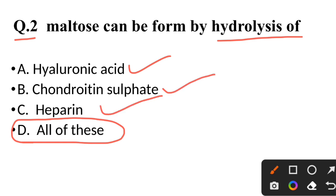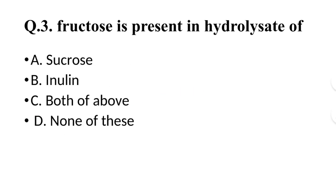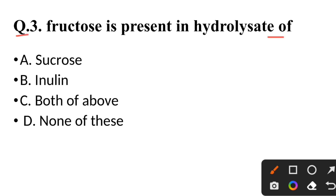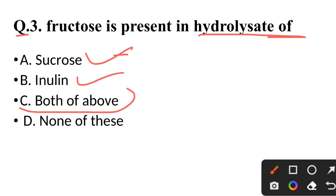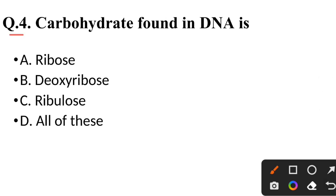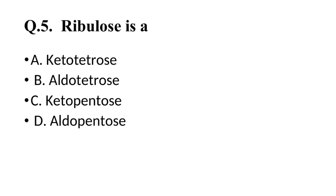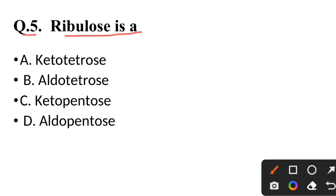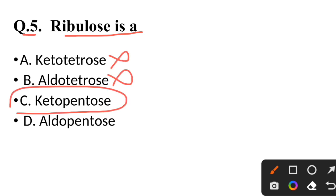Question 3: Fructose is present in the hydrolysis of — correct answer is both sucrose and inulin. Question 4: The carbohydrate found in DNA is — correct answer is deoxyribose. Question 5: Ribulose is a — correct answer is ketopentos (ketopentose).